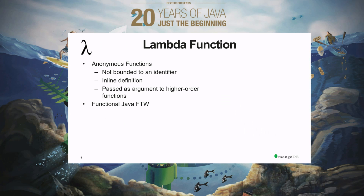Lambda functions have been here for a while — we could use anonymous functions before, we just didn't call them lambdas. But with the new notations and specification, it's much easier and more comfortable to use them. It's very similar if you're familiar with other languages like Python or Ruby. It's mostly allowing us to represent higher-order functions, making our code much more streamlined and well understood from a processing pipeline standpoint.